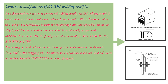Constructional Features of AC-DC Welding Rectifier: A welding rectifier set is used to convert AC welding supply into DC welding supply. It consists of a step-down transformer and a welding current rectifier cell with a cooling fan, as shown in Figure 1. The rectifier cell consists of a supporting plate made of steel or aluminum, plated with a thin layer of nickel or bismuth, and sprayed with selenium or silicon. The coating of nickel or bismuth over the supporting plate serves as one electrode — the anode of the rectifying cell.